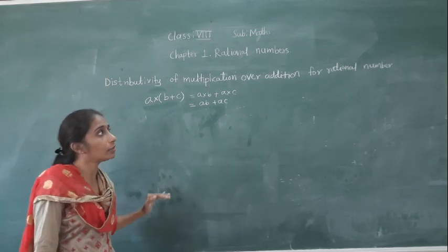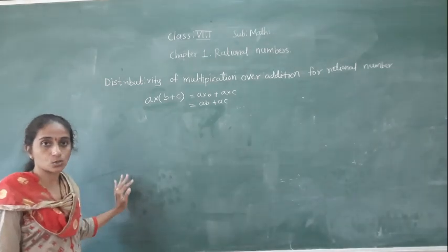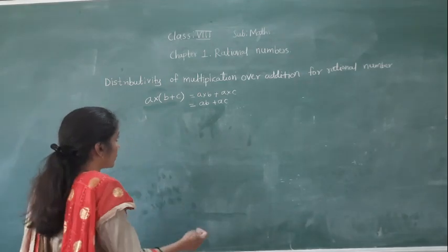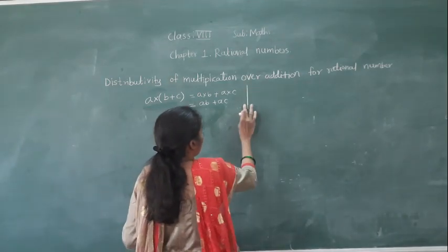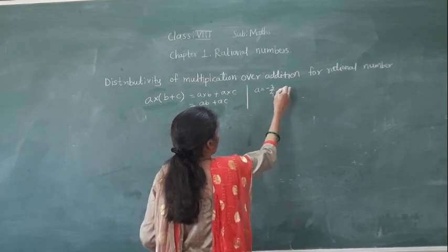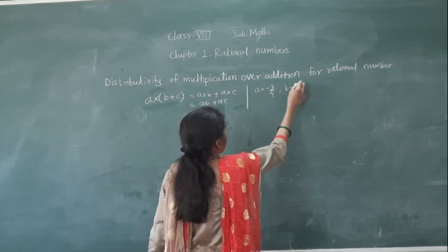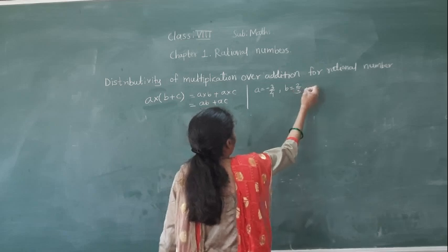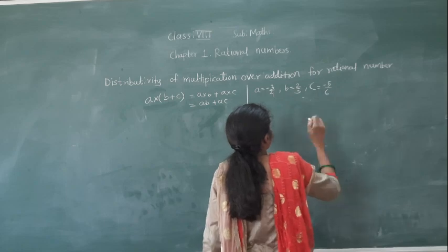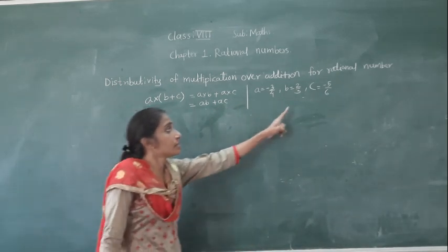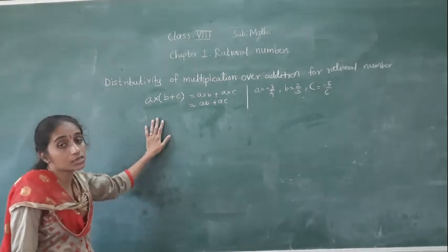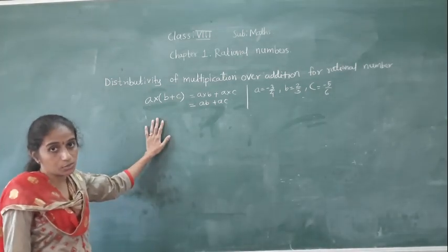Now we have to learn this property for rational numbers. We will take any three rational numbers. Here I will write: suppose a is equal to minus 3 upon 4, b is equal to 2 upon 3, and c is equal to minus 5 upon 6. These are the three rational numbers. We will learn this property for rational numbers.